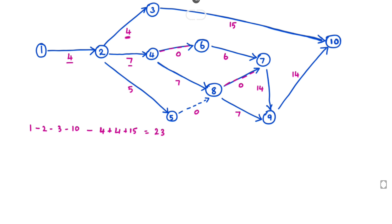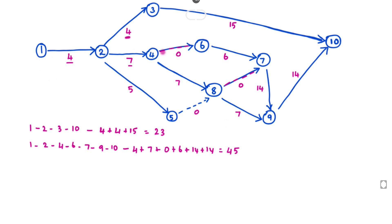Next path is 1-2-4-6-7-9-10. The corresponding durations are 4 plus 7 plus 0 plus 6 plus 14 plus 14. The total duration will be 46.